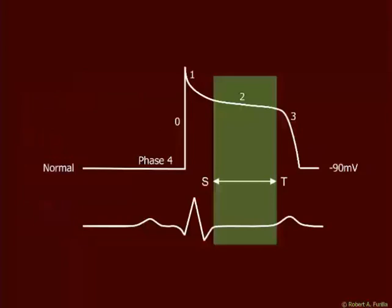Looking at our myocyte action potential and comparing it with an electrocardiogram: phase 4 is diastole, phase 0 is the onset of the action potential, phase 1 is when the action potential begins to decline. By phase 2, we see a plateau period in which all the myocytes are contracted, and phase 3 is relaxation. The EKG is actually a combination of several myocytes, and the ST segment represents the plateau phase of the myocyte's action potential.